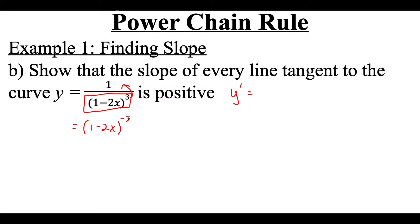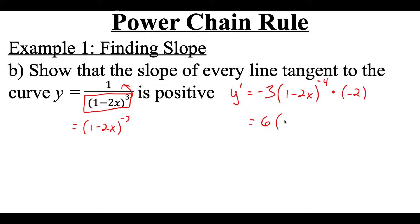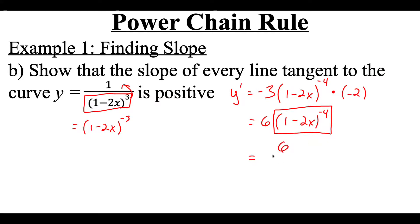The power chain rule says: drop that power down as a multiplier, leave the stuff on the inside the same, subtract 1 from the power, then multiply by the derivative from the inside. The derivative of 1 is 0, and the derivative of negative 2x is negative 2. Multiplying negative 2 times negative 3 gives us 6 times (1 minus 2x) to the negative fourth power. Then we drop that piece down to the bottom of the fraction to make the power positive again: 6 on top, (1 minus 2x) to the fourth power on the bottom.